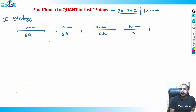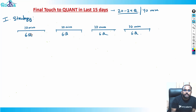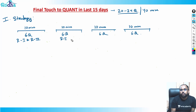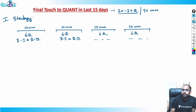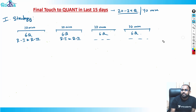Divide each 10-minute slot into two rounds — round one and round two. So each 10-minute block goes: round one then round two. For every 10 minutes, always start with the easier questions.